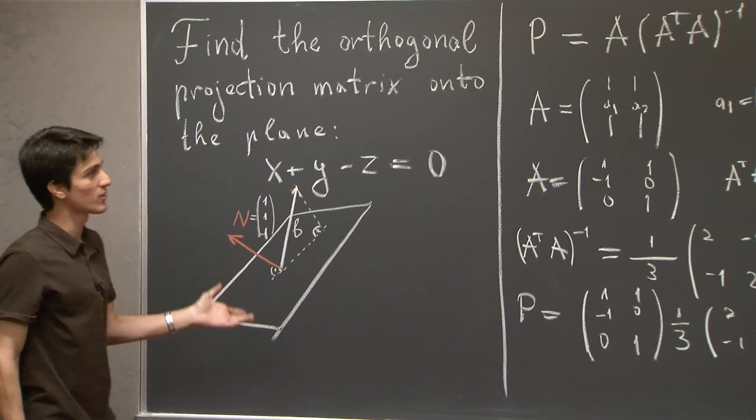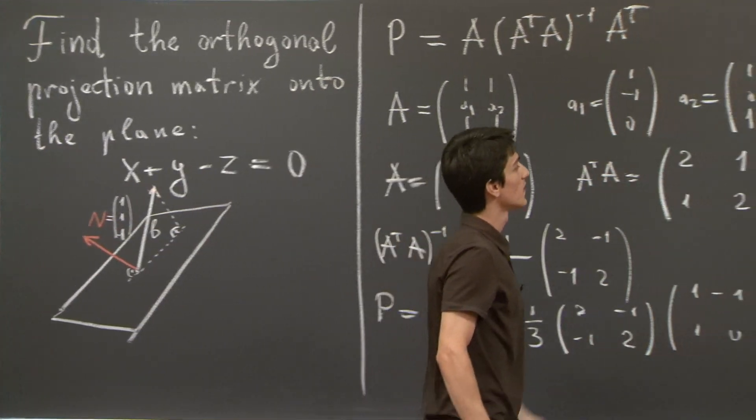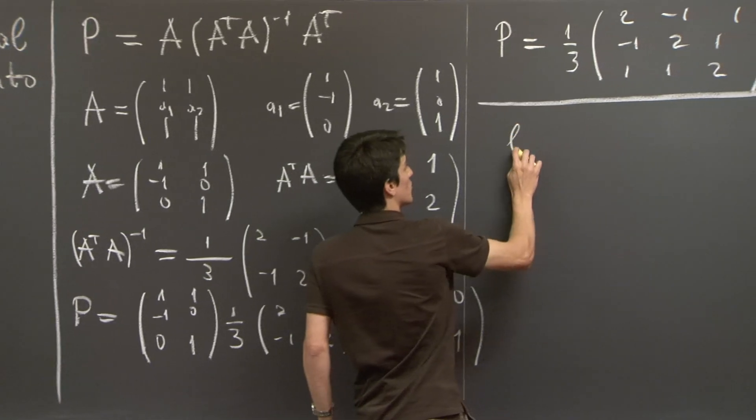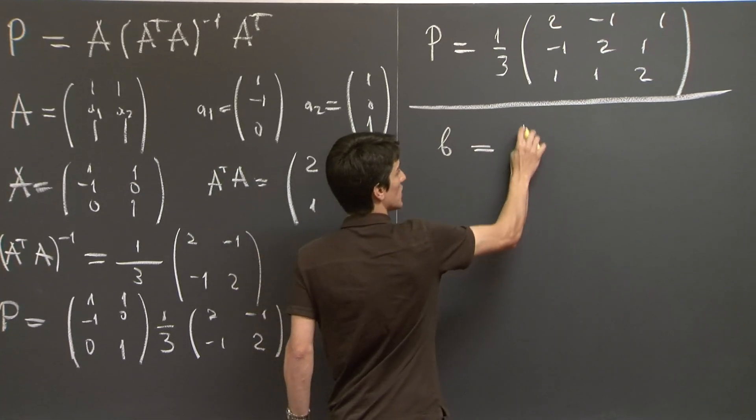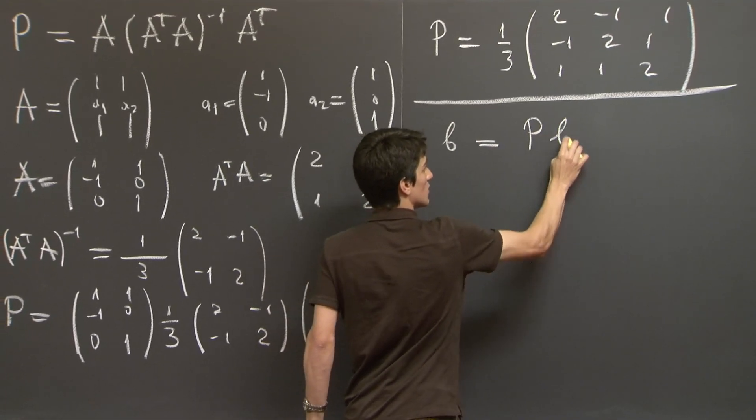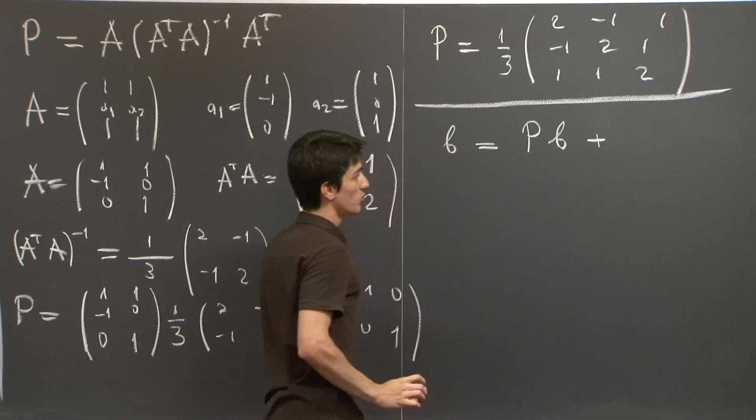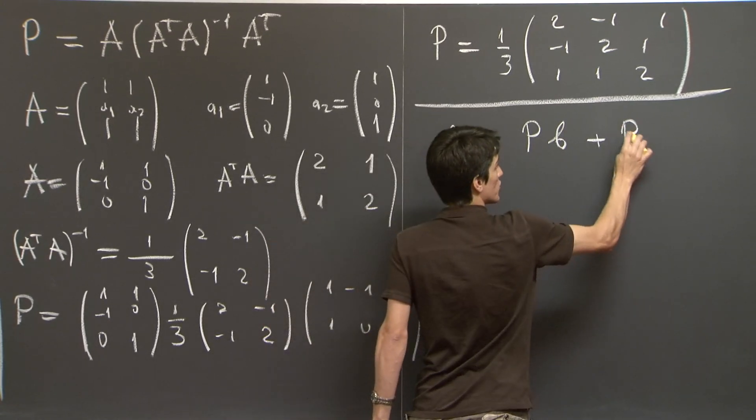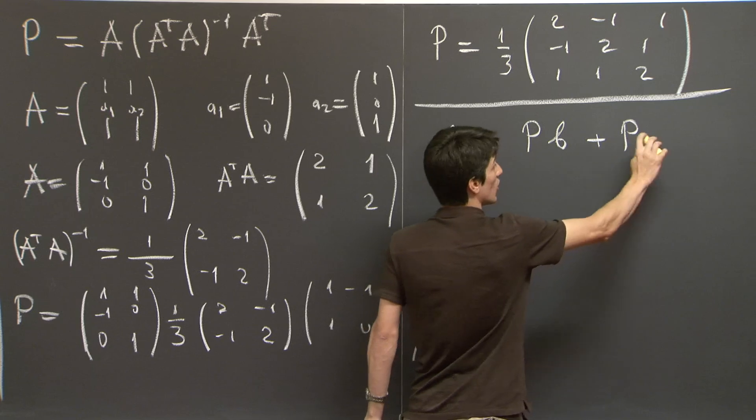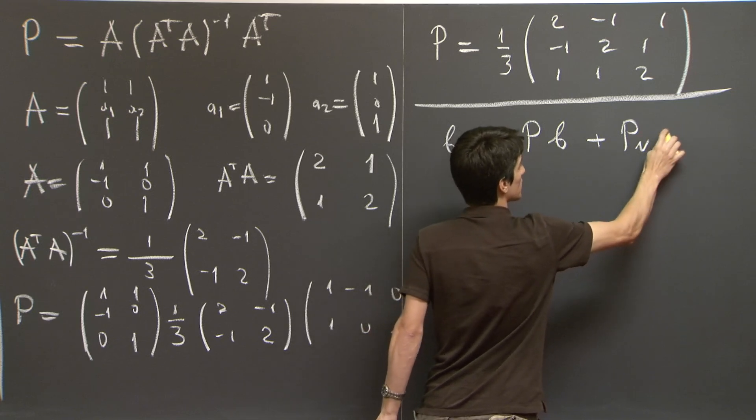In this case, onto the normal vector to the plane. So in the language of linear algebra, this is just B equals to its projection onto the plane, plus its projection, I'm going to call it PN, onto the orthogonal complement of the plane.